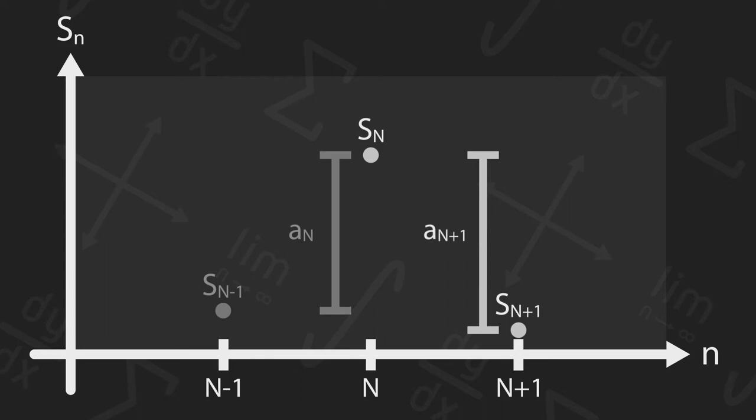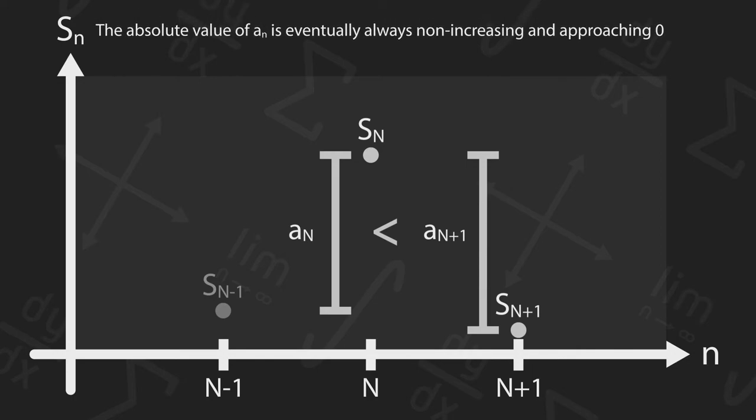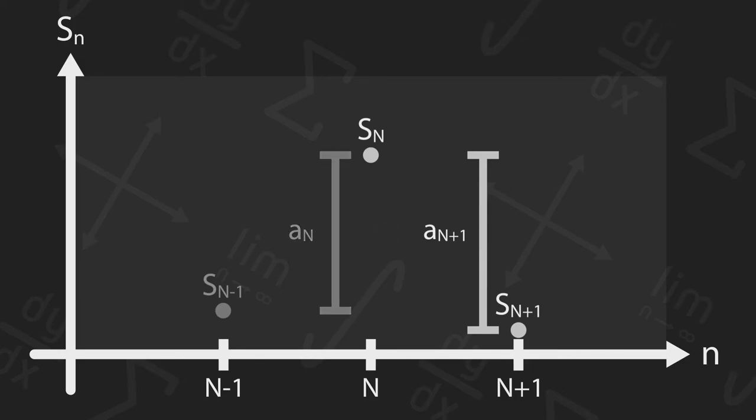Thus, it would violate the property that the absolute value of the terms in a converging alternating series cannot increase. So, S sub n plus 1 must be above S sub n minus 1.